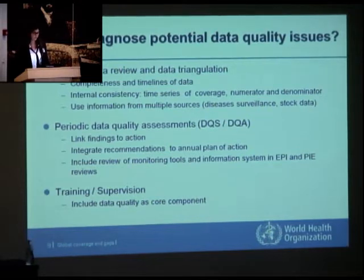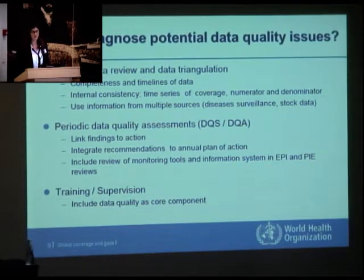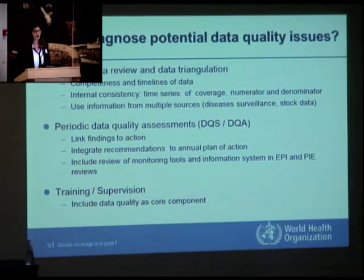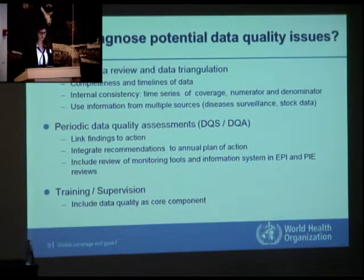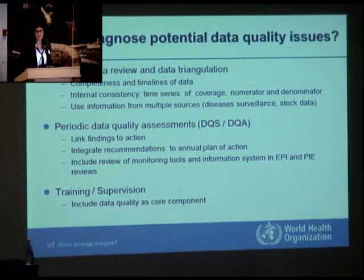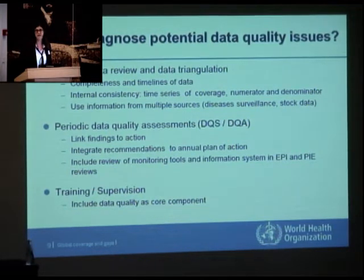Immunization programs have tools such as data quality assessments, which help review the quality of data and the flow of information. However, just reviewing and identifying issues is not enough. What really needs to be done — and often is not done — is to link findings to action, integrate recommendations into an annual work plan, and include review and monitoring tools into the classical EPI program review and post-introduction evaluations, which are already existing tools that look at immunization program functioning.